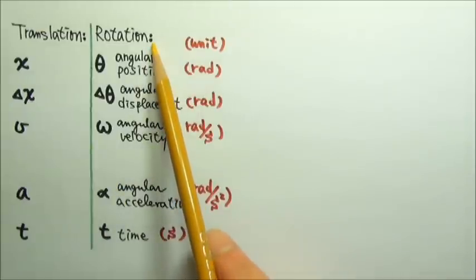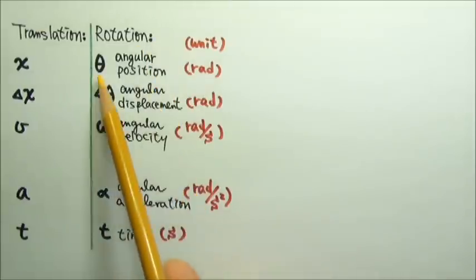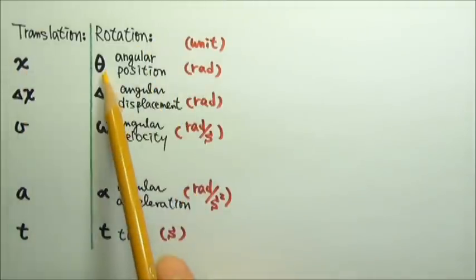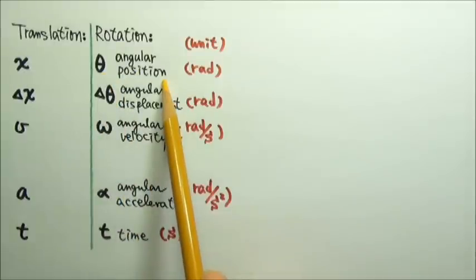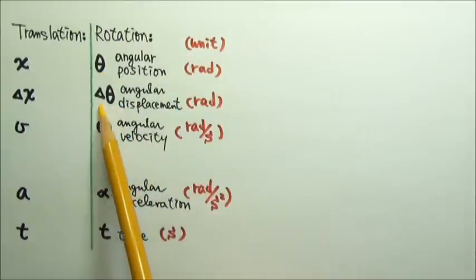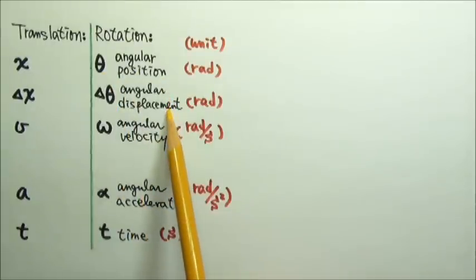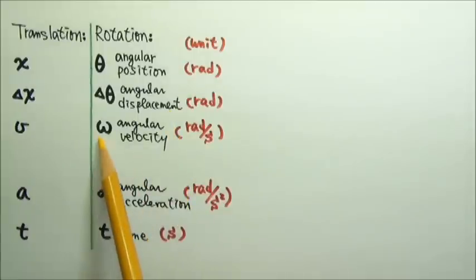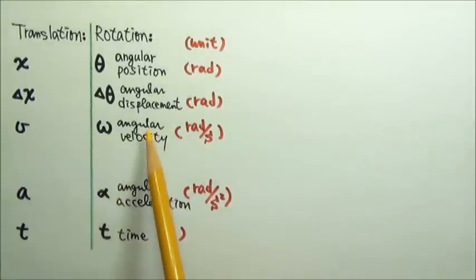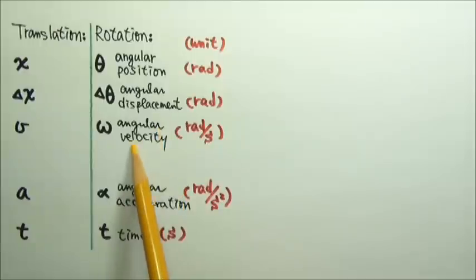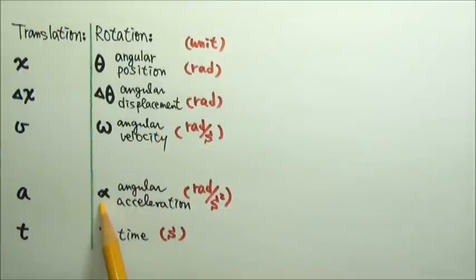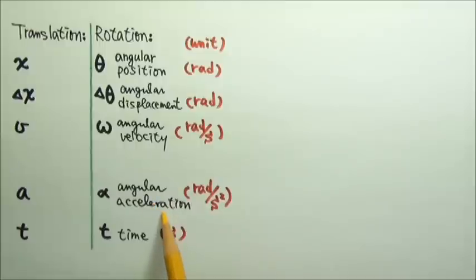To describe rotational motion, we have theta for angular position, delta theta for angular displacement, and omega — the Greek letter omega — for angular velocity. And the Greek letter alpha for angular acceleration, while t is still the same for time.